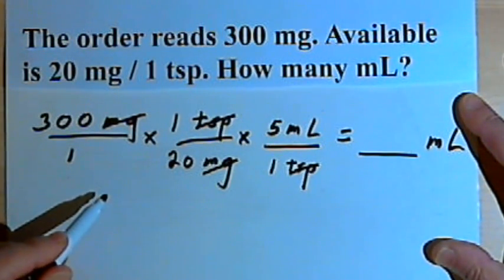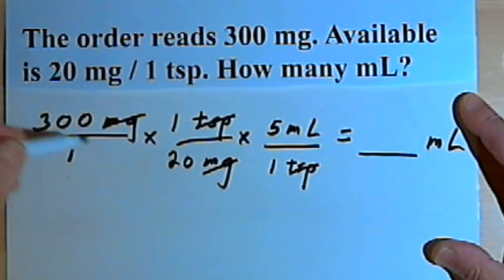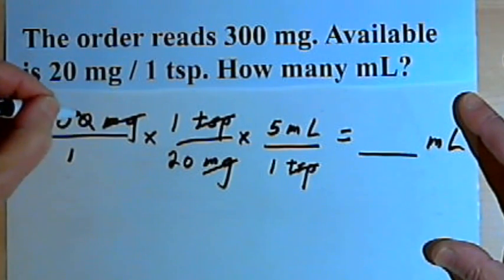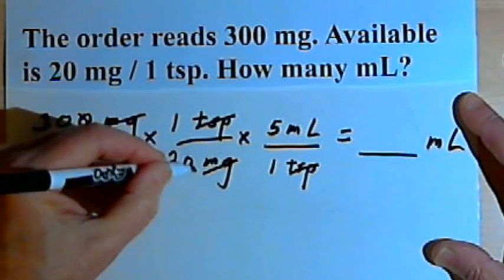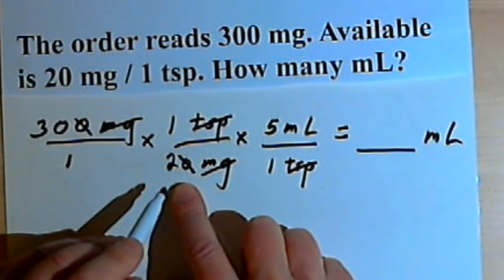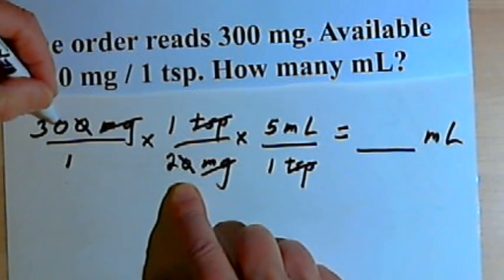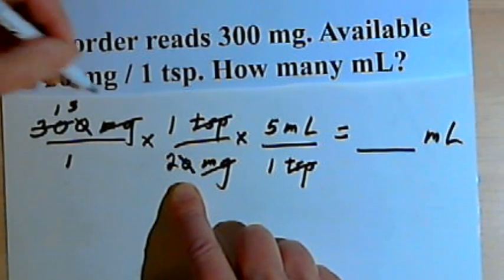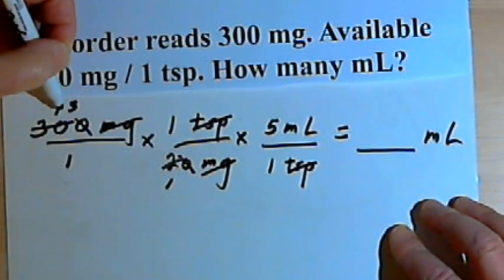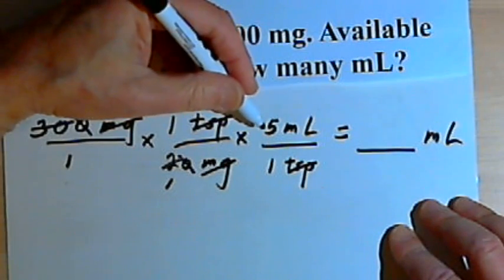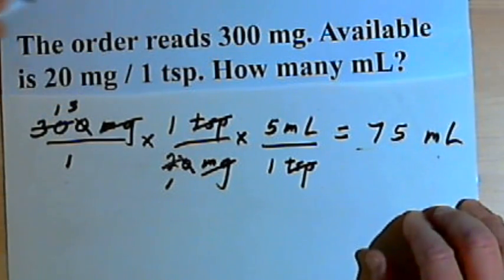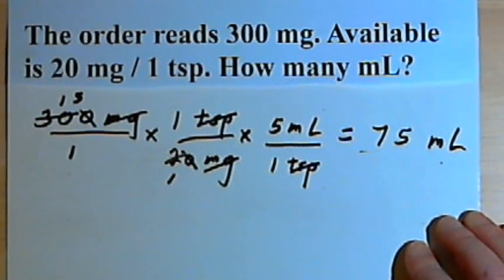Let's simplify. I've got 300 and 20, so divide both by 10 to get 30 and 2. Then divide 30 and 2 both by 2 to get 15 and 1. So I end up with 15 times 1 times 5, which is 75 milliliters. So 75 milliliters is the answer for this one.